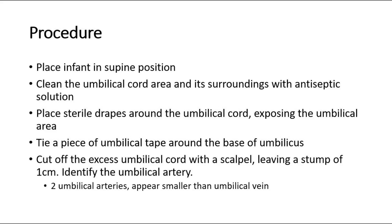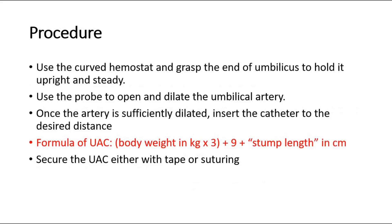We also have to identify the umbilical artery. There will be two umbilical arteries, and they appear smaller compared to the umbilical vein. Next, use the curved hemostat and grasp the end of the umbilicus to hold it upright and steady. Use the probe to open and dilate the umbilical artery. Once the artery is sufficiently dilated, insert the catheter to the desired distance.